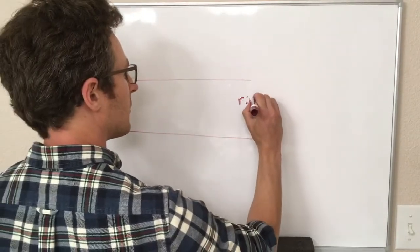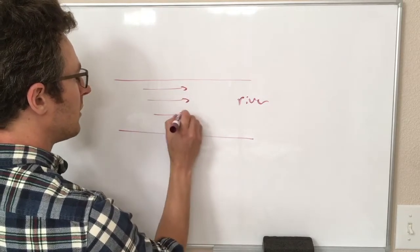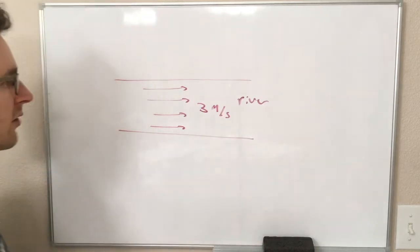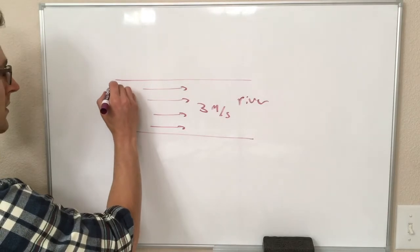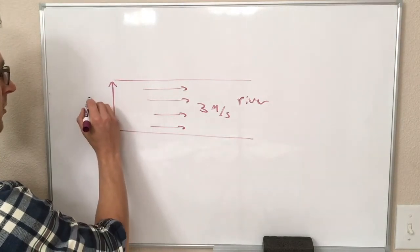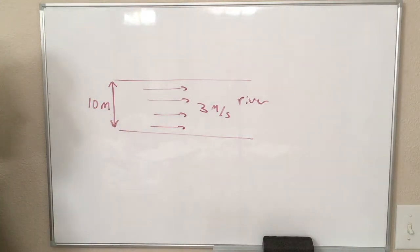and we have a river that is flowing to the right at 3 meters per second. So the velocity of our river is 3 meters per second. And the river is, we will say, 10 meters across, so that's about 30 feet across, that's a decent river.